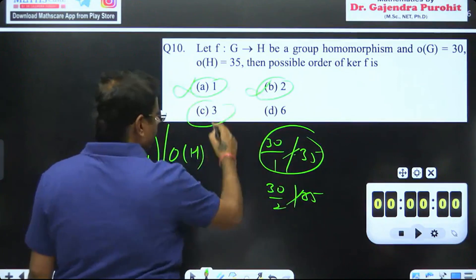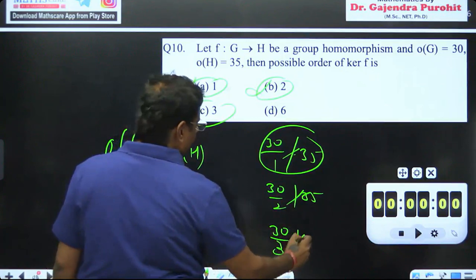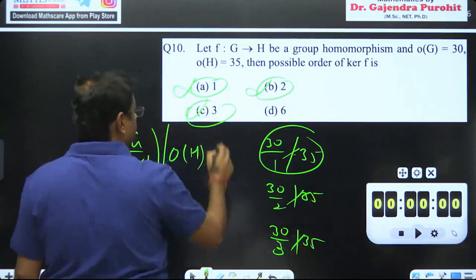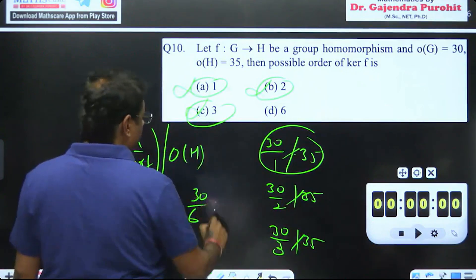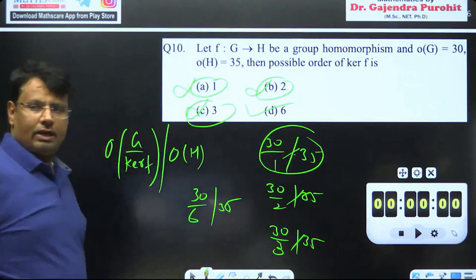So if we compare 30 divided by 3, and if we compare 30 divided by 6, then we can divide. So this is the right option.